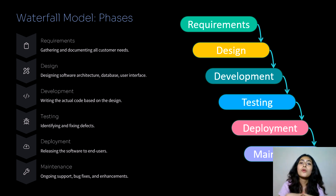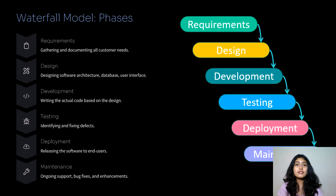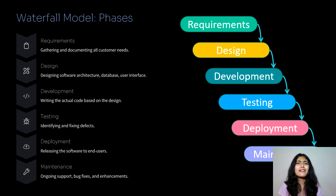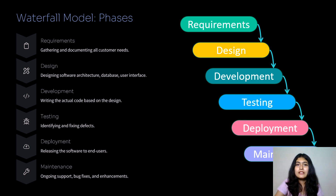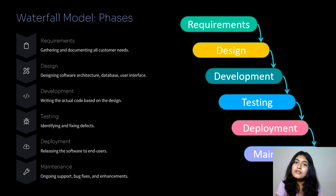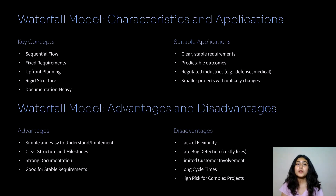The next step is deploy. With no bugs or errors and running successfully, the product is released to end users — for example, apps like Facebook, Swiggy, and Instagram are used by us as end users. Next is maintenance, which is like the updates you keep receiving after the product is released to end users.